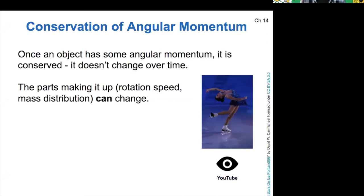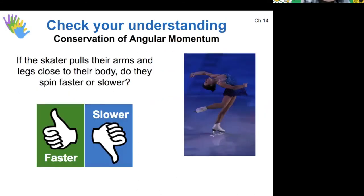And a good example of this is an ice skater. So a rotating ice skater has some amount of angular momentum. And once they have a certain amount, then that doesn't change over time. It's what we call a conserved quantity in physics. So the parts that make it up, such as the rotation speed and the distribution of mass. So the shape of the ice skater's body, those can change, but the total amount of angular momentum does not. And you're probably familiar with this concept, whether you have ever thought about it or not.